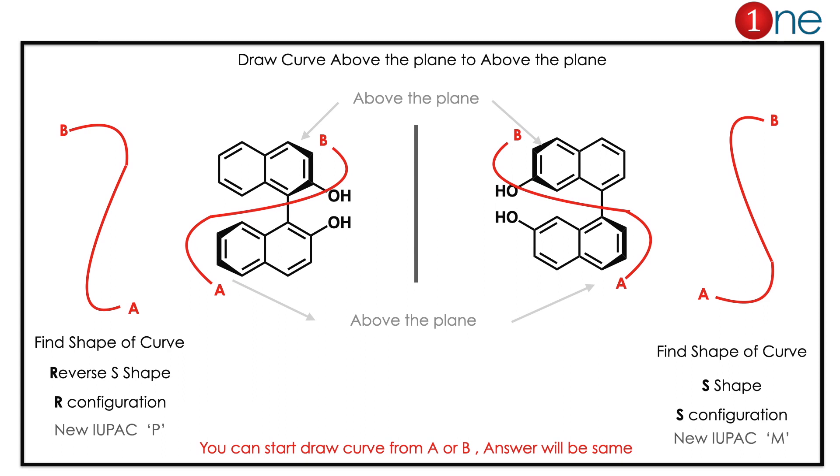If you look at the right side molecule, you start from A to B, meaning above to above. You have an S shape and S configuration. The new IUPAC name is M. The shape is reverse, meaning R. S shape means it is S. So R to P, S to M.